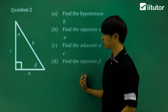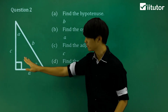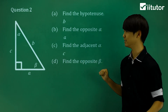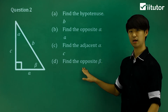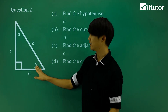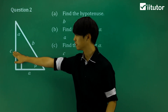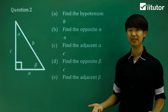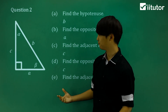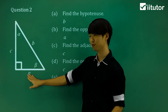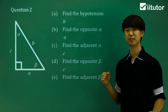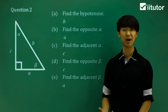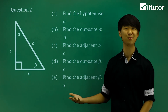Now we're going to consider the other angle. We have alpha, and we also have another angle called beta. I want you to try and familiarise yourself with these symbols and names. In part D, finding the side opposite to beta — here's beta, and the side opposite to it is side C. In part E, finding the adjacent of beta — the one right next to it is side A. So that's the most fundamental part of trigonometry — we're just labeling the sides.